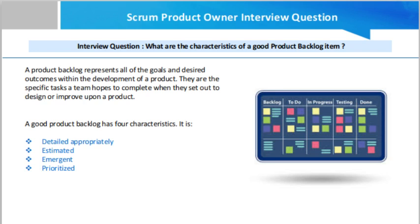Prioritized: A product backlog needs prioritization. Items at the top are high priority and items toward the bottom are low priority. When deciding which items should be prioritized, consider the value each item will provide.